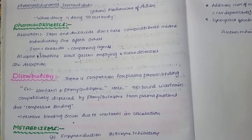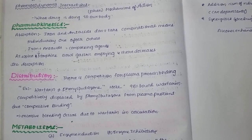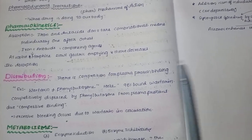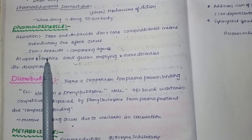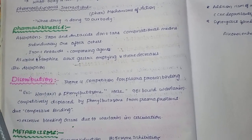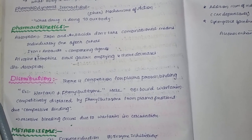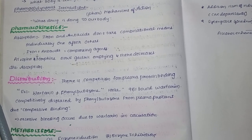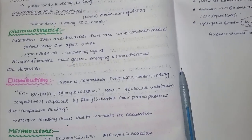Atropine and morphine slow gastric emptying, thereby decreasing drug absorption. When gastric emptying is slowed, drugs spend more time in the stomach and less time in the small intestine, where most absorption via microvilli occurs. This reduces the surface area available for absorption.